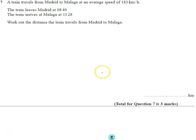Right, question number seven. We are talking about a train travelling between two Spanish places, Madrid and Malaga, and it gives us the speed.